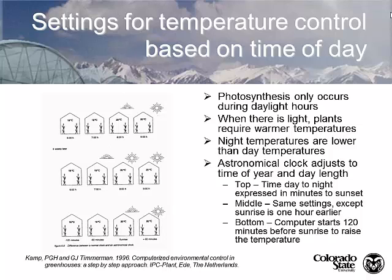We can also set our controls based upon whether it's sunny or cloudy out. If it's cloudy and we don't have supplemental illumination, there's no point in raising the temperature up to maximum photosynthesis rates, so we'll keep the temperature low and save on fuel because we don't have enough light to generate enough photosynthates. Sometimes there'll be cloudy-day settings and sunny-day settings. When there's lots of light and it's bright out, we'll raise our temperature almost 10–15 degrees above the normal set point — taking advantage of that extra energy to drive photosynthesis way up.